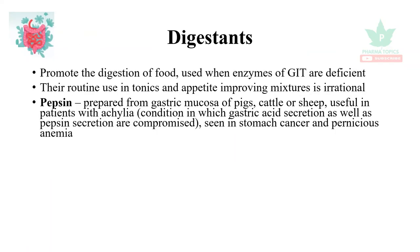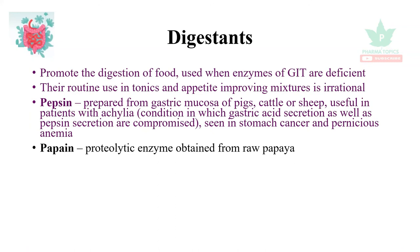Digestants promote the digestion of food and are used when the enzymes of the GI tract are deficient. Their use in tonics and appetite stimulant mixtures is considered irrational. Pepsin is prepared from the gastric mucosa of pigs, cattle, or sheep. It is useful in achylia, a condition where gastric acid secretion as well as pepsin secretion are compromised, also seen in stomach cancer and pernicious anemia. Papain is a proteolytic enzyme obtained from raw papaya.